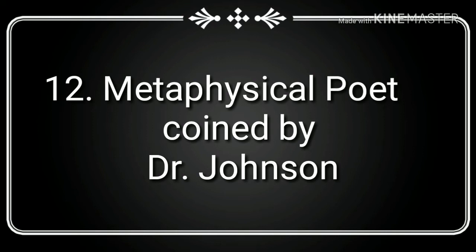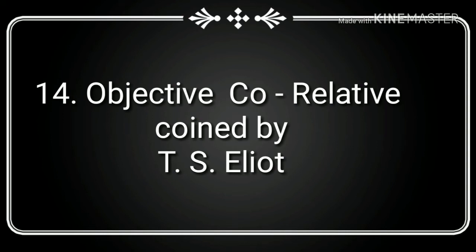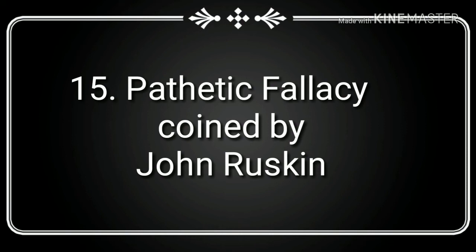Number twelve, Metaphysical Poets — this term was coined by Dr. Johnson. Number thirteen, Negative Capability — this term was coined by John Keats. Number fourteen, Objective Correlative — this term was coined by T.S. Eliot. Number fifteen, Pathetic Fallacy — this term was coined by John Ruskin.